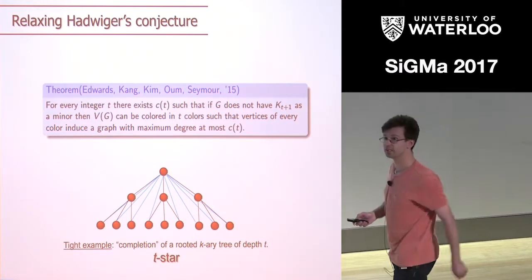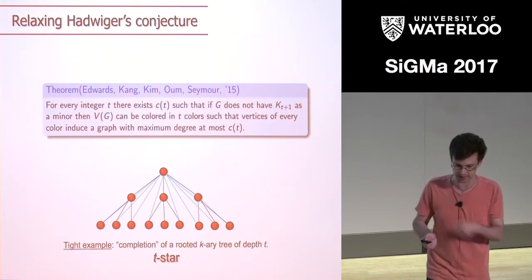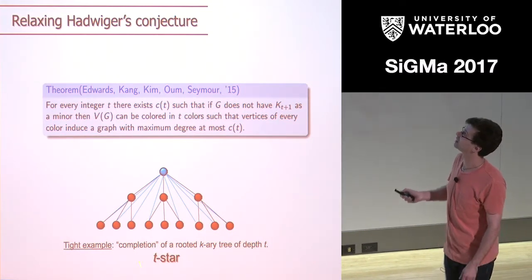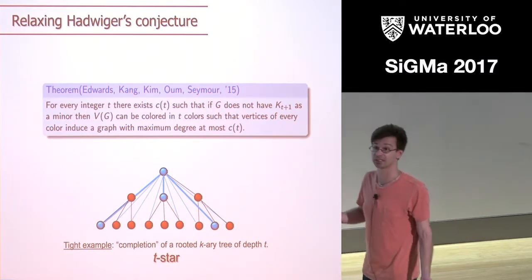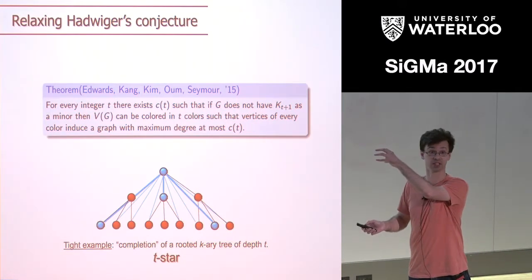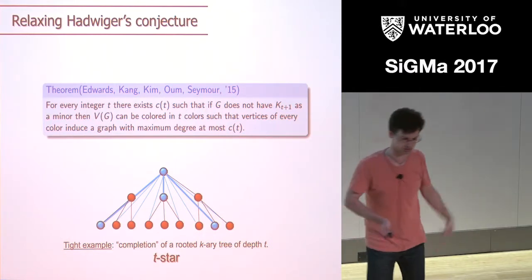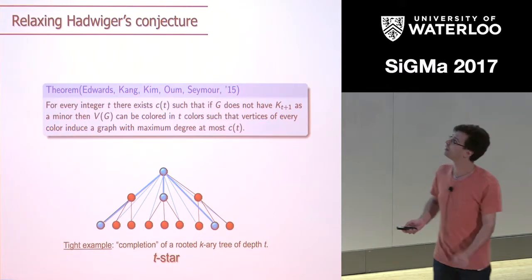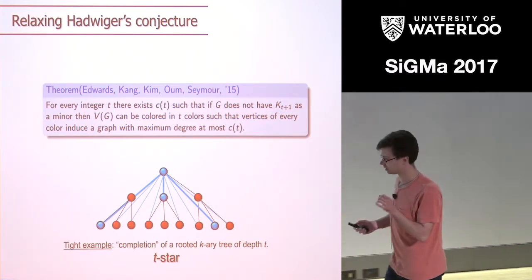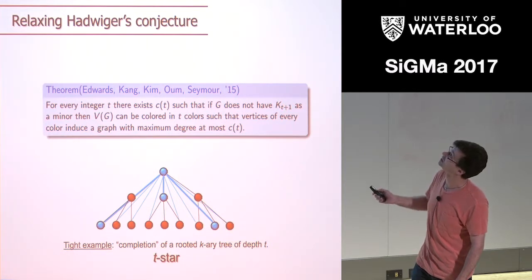Suppose we are trying to color the T-star so that maximum degree is less than K. Color the root. Underneath it there are K different subtrees. If there is a vertex of the same color in every subtree, you have a vertex of degree K — not allowed. So there is a subtree which has no vertex of this color; use induction. That subtree has depth T-1 and one fewer color. Doing this, if your maximum degree is bounded you need at least as many colors as the depth of the tree, which equals the maximum size of your clique minor. So the theorem is tight in terms of number of colors.